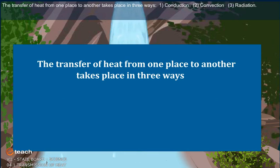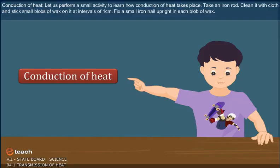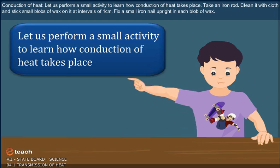The transfer of heat from one place to another takes place in three ways: 1. Conduction, 2. Convection, 3. Radiation. Conduction of heat. Let us perform a small activity to learn how conduction of heat takes place.